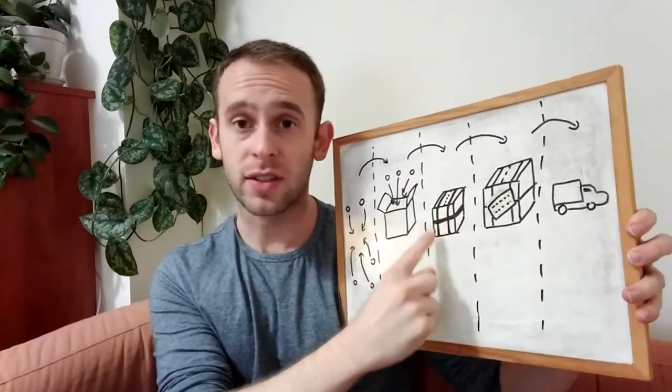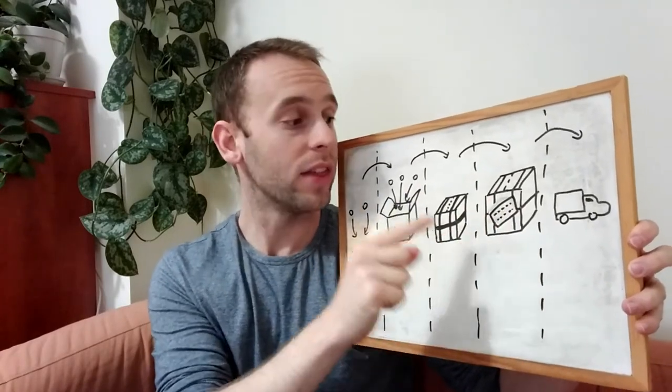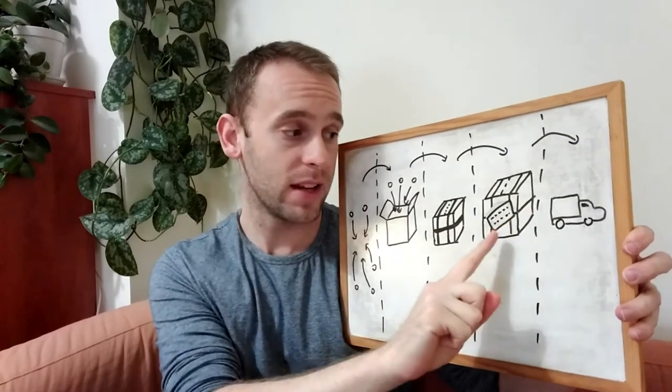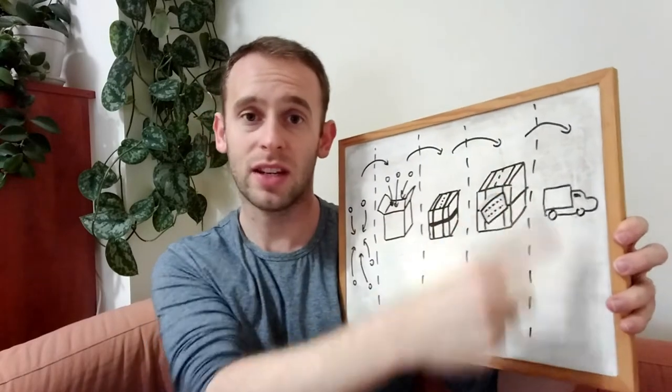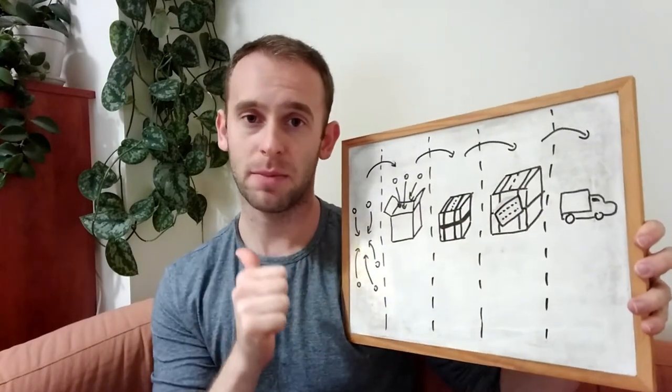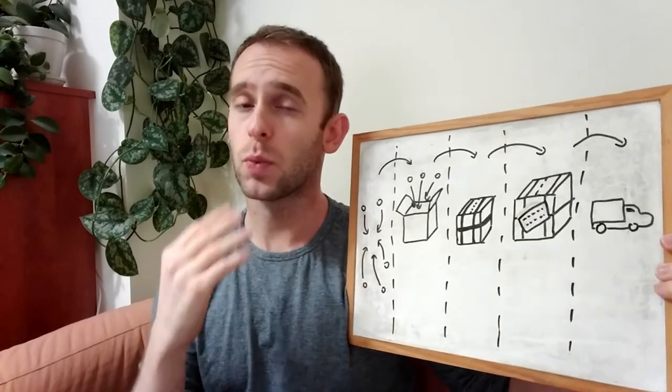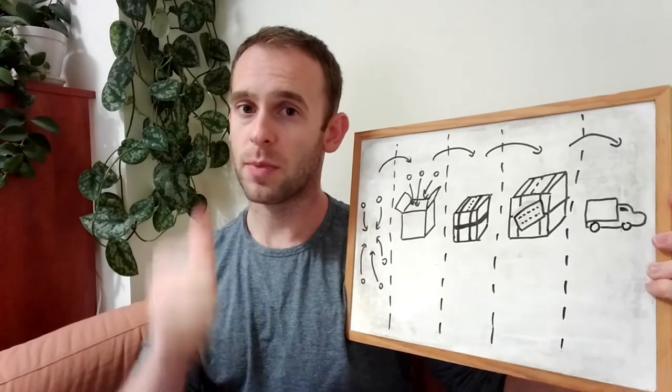For example, the packaging state is feeding the address putting state, and the sending state is fed by the address putting step. So each step is feeding the next step and is fed by the previous step. In other words, each step produces work for the next step and consumes work from the previous step.